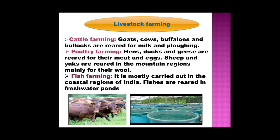Livestock farming. Cattle farming: goats, cows, buffaloes and bullocks are reared for milk and ploughing, and used in cultivated fields to plough the land. Poultry farming: hens, ducks and geese are reared for their meat and eggs. Sheep and yaks are reared in the mountain regions, mainly for their wool. Fish farming: it is mostly carried out in the coastal regions of India, and fish are also reared in fresh water ponds.